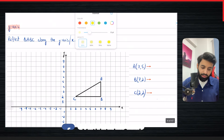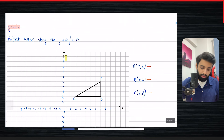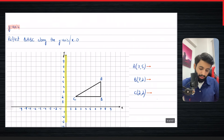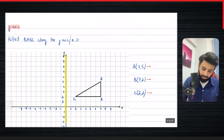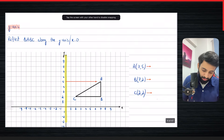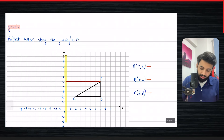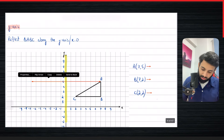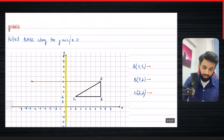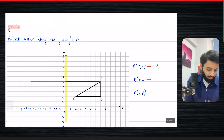Now we're going to do the exact same thing, but this time reflecting along the y-axis. I'm highlighting the y-axis. Point A is seven units towards the right, so if I reflect it, it goes seven units towards the left — ending up at minus seven comma five.